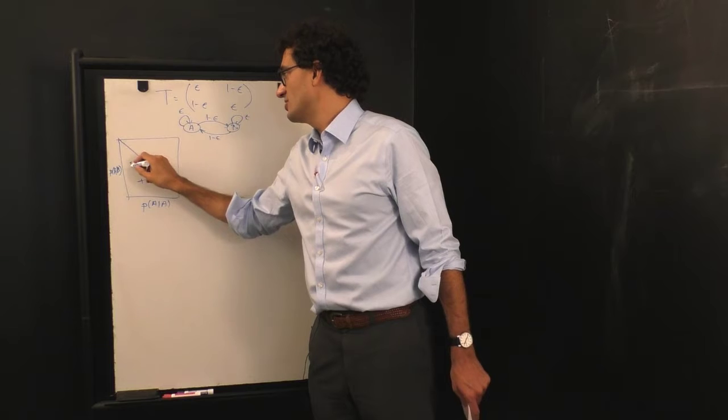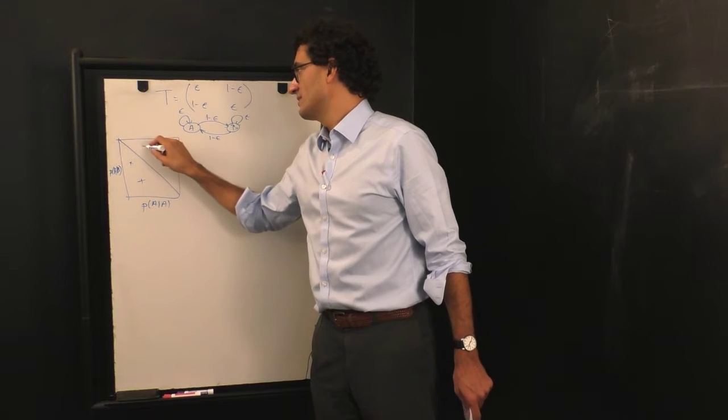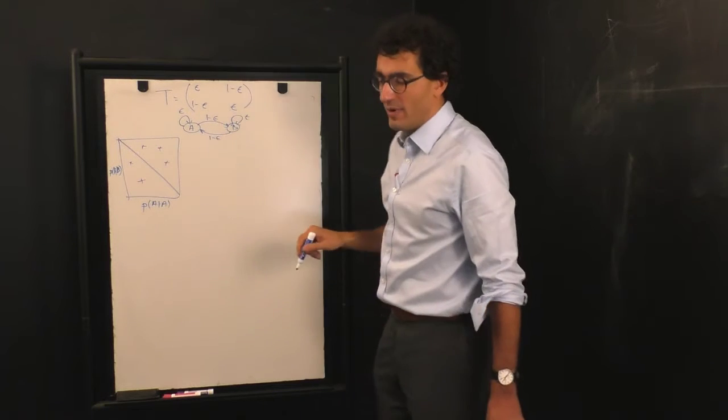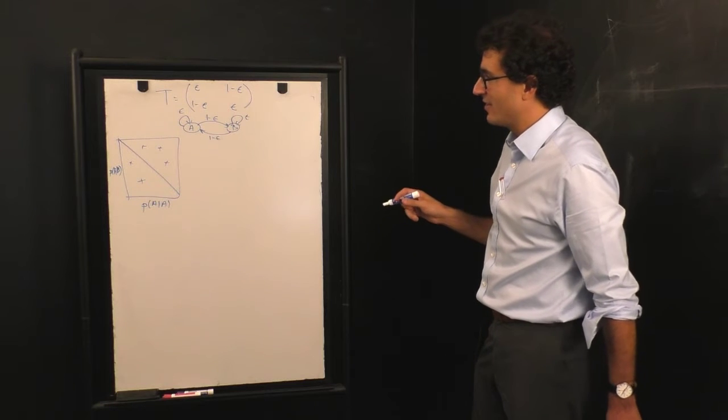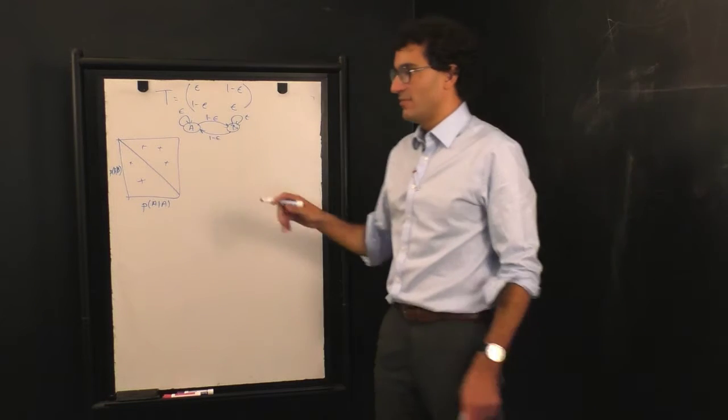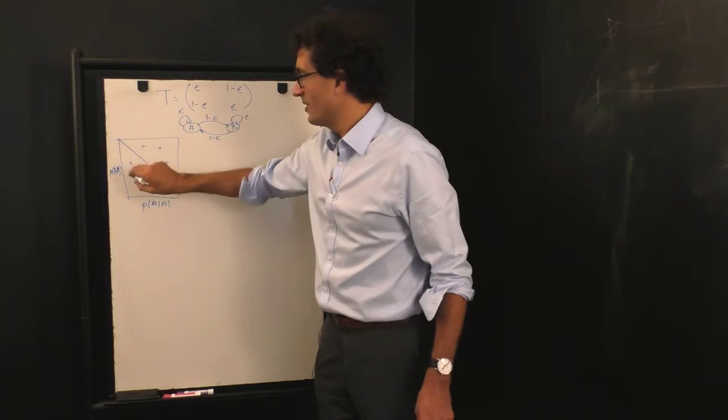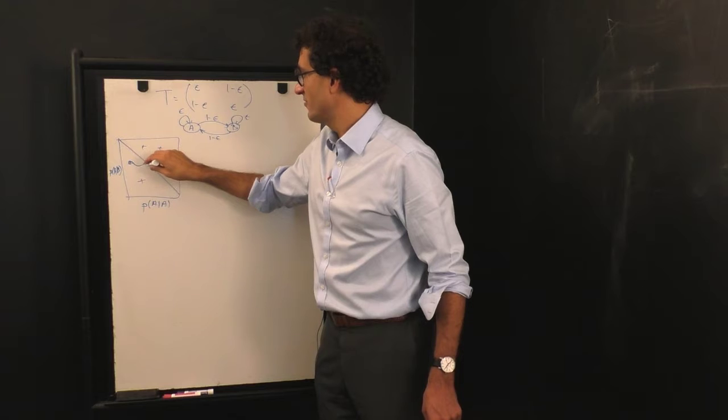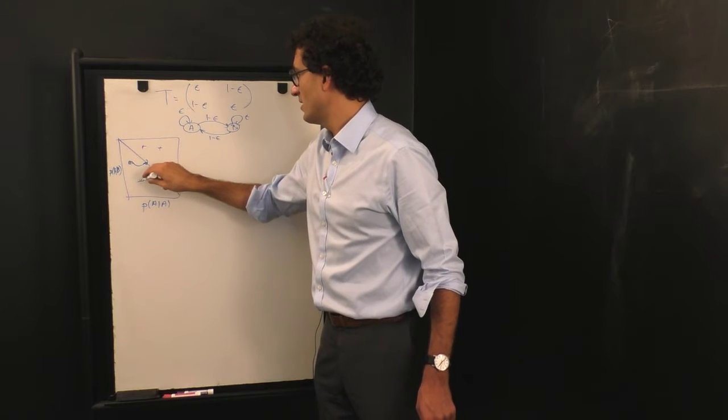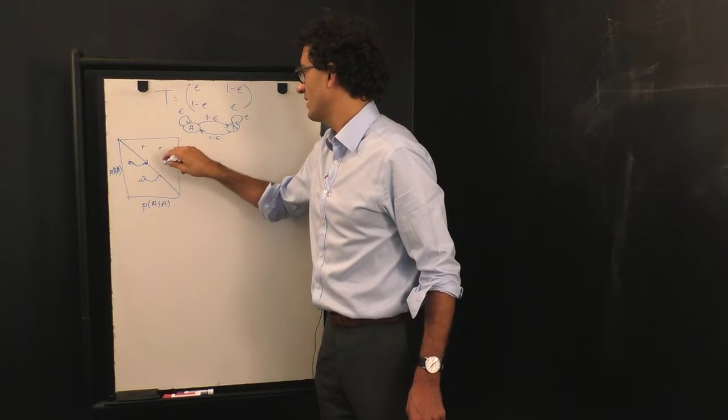And what we find is that in general, modulo some slightly tricky things to do with the case where the first eigenvalue is imaginary, but modulo those kind of tricky cases, if you begin with a model anywhere in this space, you eventually flow to some point on this diagonal line here.